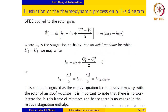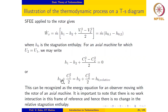In the previous lecture we mentioned that h plus c squared over 2 is a constant for an axial machine, and that this may be thought of as the energy equation for an observer moving with the rotor. It is important to note that there is no work interaction in this frame of reference. The specific enthalpy h is a static enthalpy and hence it is frame independent, so it may be evaluated in the moving frame of reference in the same manner as in a stationary frame of reference.